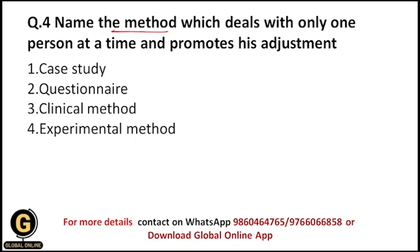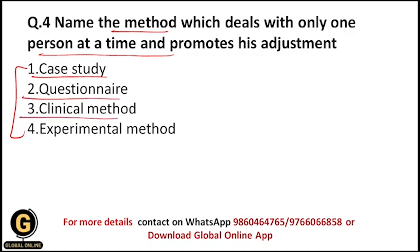Next question: name the method which deals with only one person at a time and promotes their adjustment. The options are case study, questionnaire, clinical method, and experimental method. The correct answer is case study, as we have seen earlier — within the case study we study detailed information about a single person at a time.